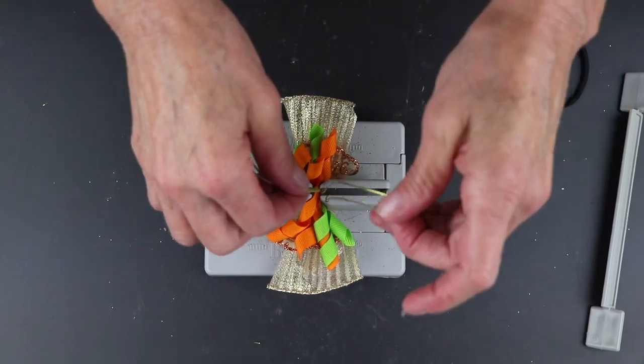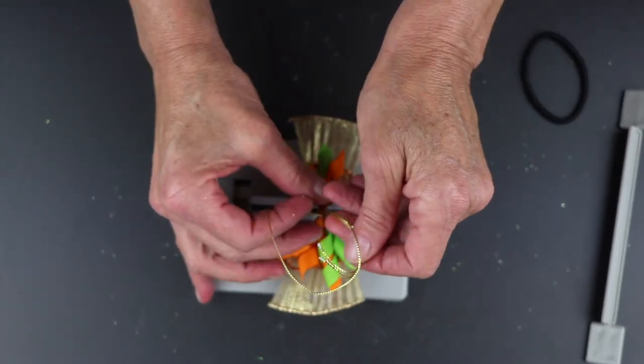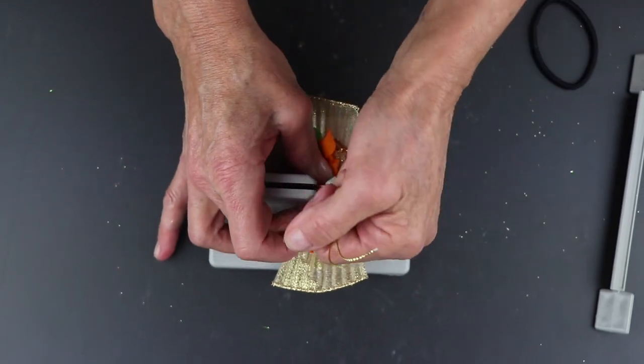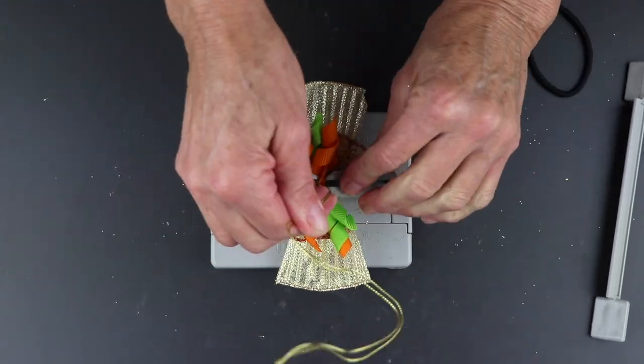Now I'm going to take my wire, I'm going to pull it through the slipknot, hold this really tight while it's still in the mini Bowdabra, and pull it out.